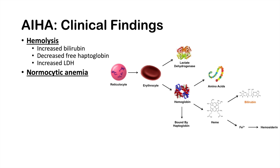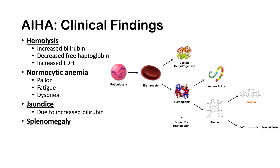In autoimmune hemolytic anemia, it is a normocytic anemia, so MCV numbers are within the normal range. With any anemia, we see pallor, fatigue, and dyspnea. Jaundice is another clinical feature due to the increased bilirubin from hemolysis. Splenomegaly is also seen and is particularly common in warm autoimmune hemolytic anemia.